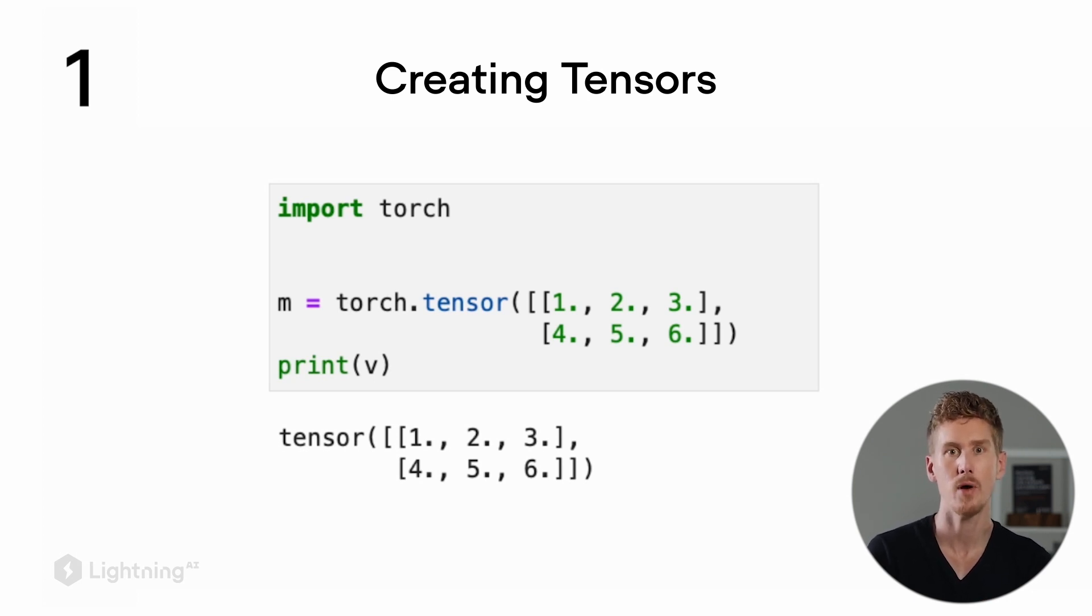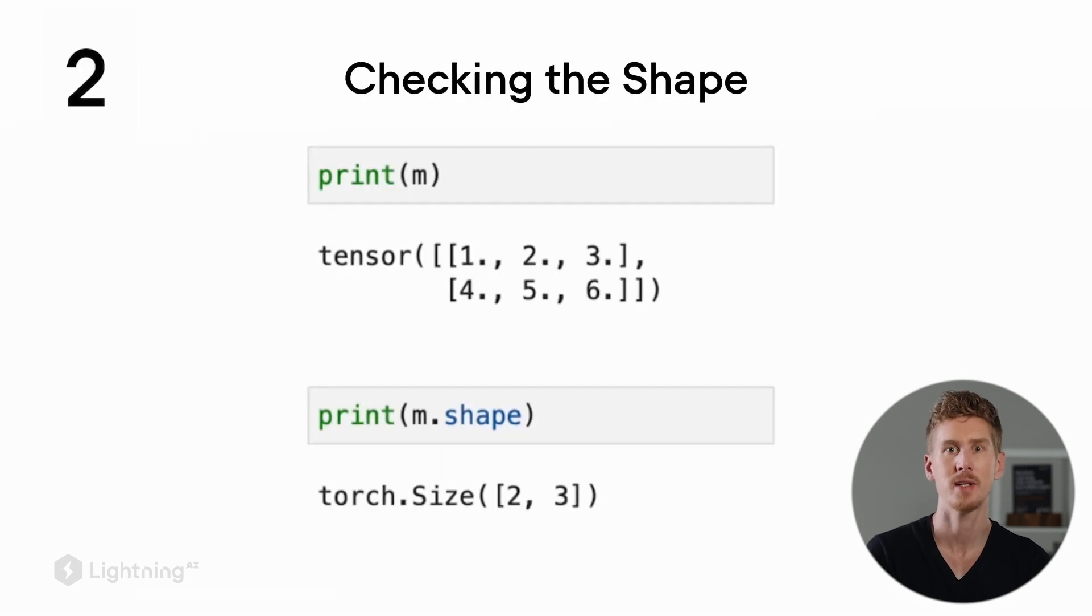Another thing we do very often is checking the shape of our tensors, which we've already seen in the previous video. Using the .shape attribute, we can check the number of elements in the tensor.